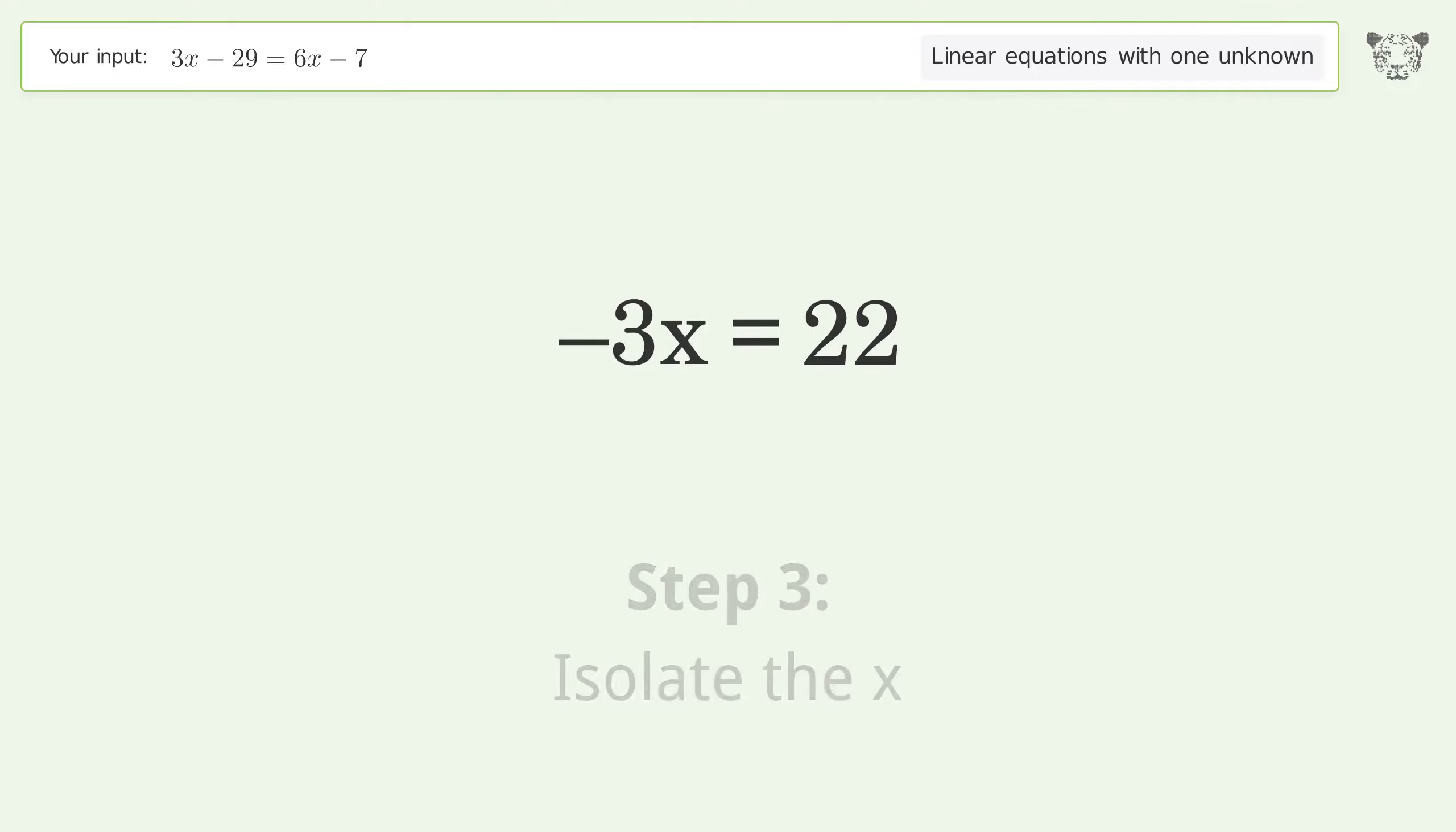Isolate the x. Divide both sides by negative 3. Cancel out the negatives. Simplify the fraction.